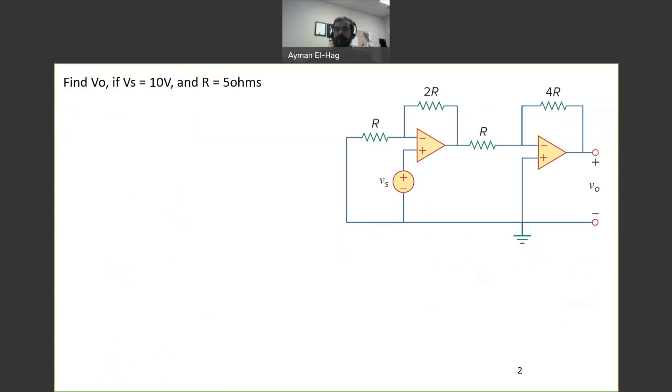So this is a question that we want to find the Vout when Vs is 10 volts and R is equal to 5 ohms. So I will keep this as an R, and then at the end I will substitute it with R and Vs value. But again, as I said, before we start solving the problem, let's see what is the strategy.